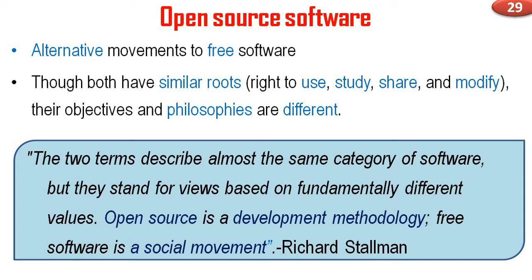The two terms describe almost the same category of software, but they stand for views based on fundamentally different values. Open source is a development methodology; free software is a social movement. In our case, Python is an open source software.